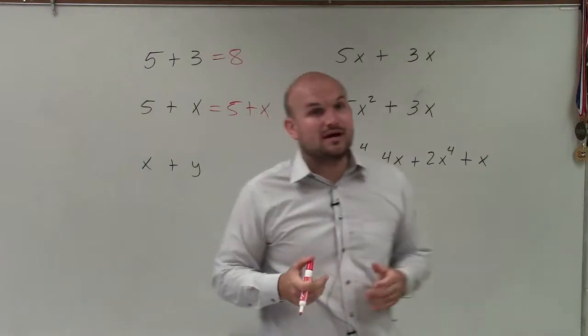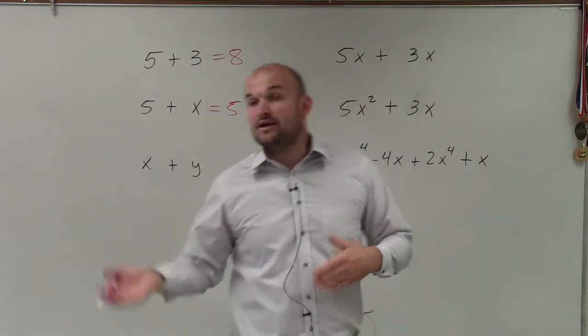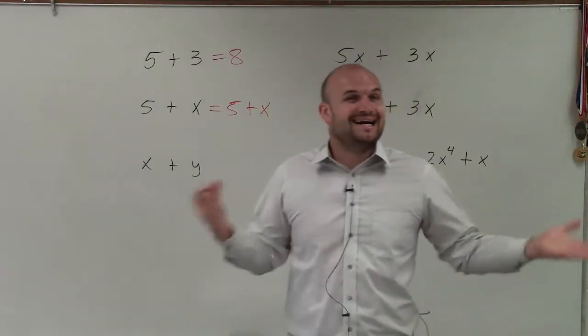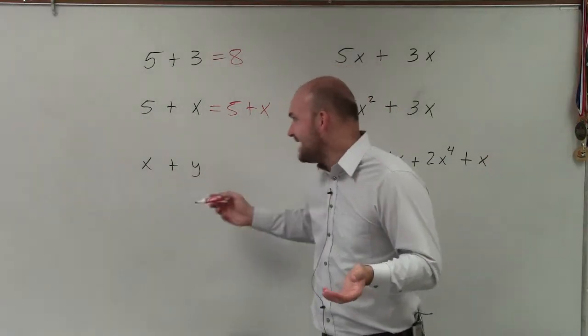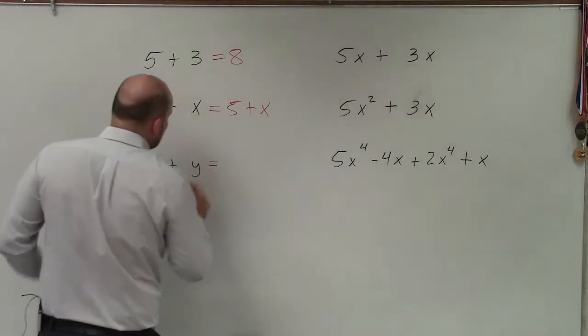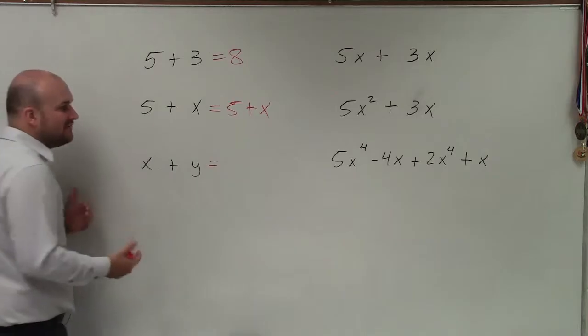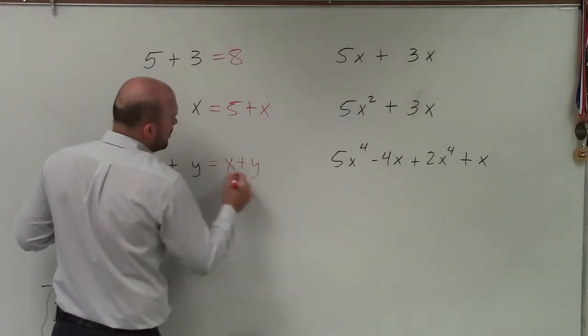Here, we have two unknowns that are not the same, right? One's an x, one's a y. So x represents one number, y represents another. Again, we don't know what they represent, though. So I can't say x is 8 and y is 7. I don't know what they are. So therefore, they're not the same. They don't have the same variable factors. So therefore, I cannot combine them. So I just leave this as x plus y.